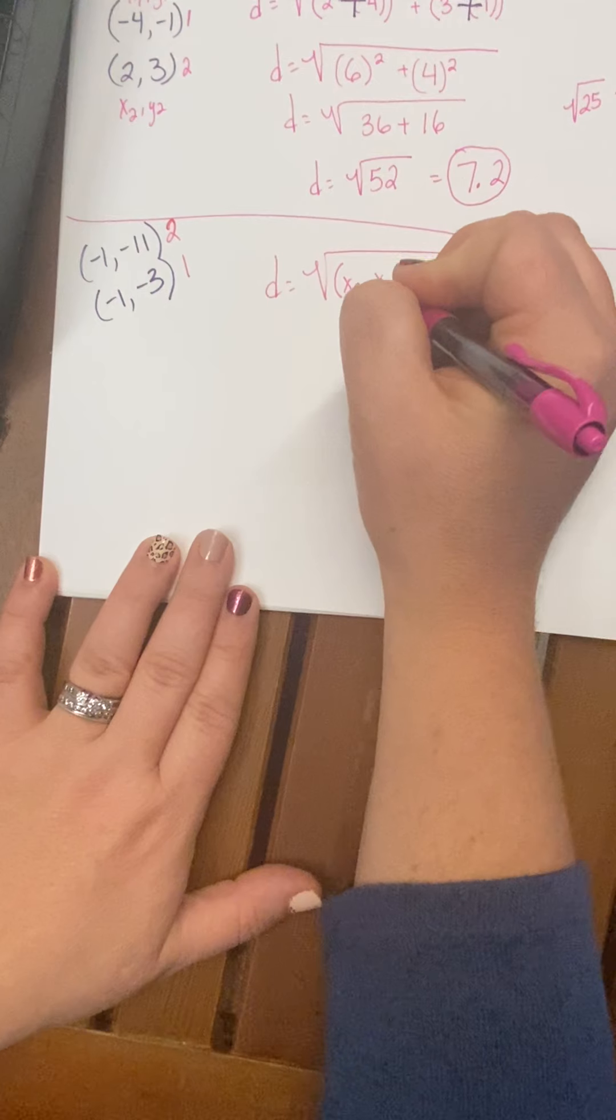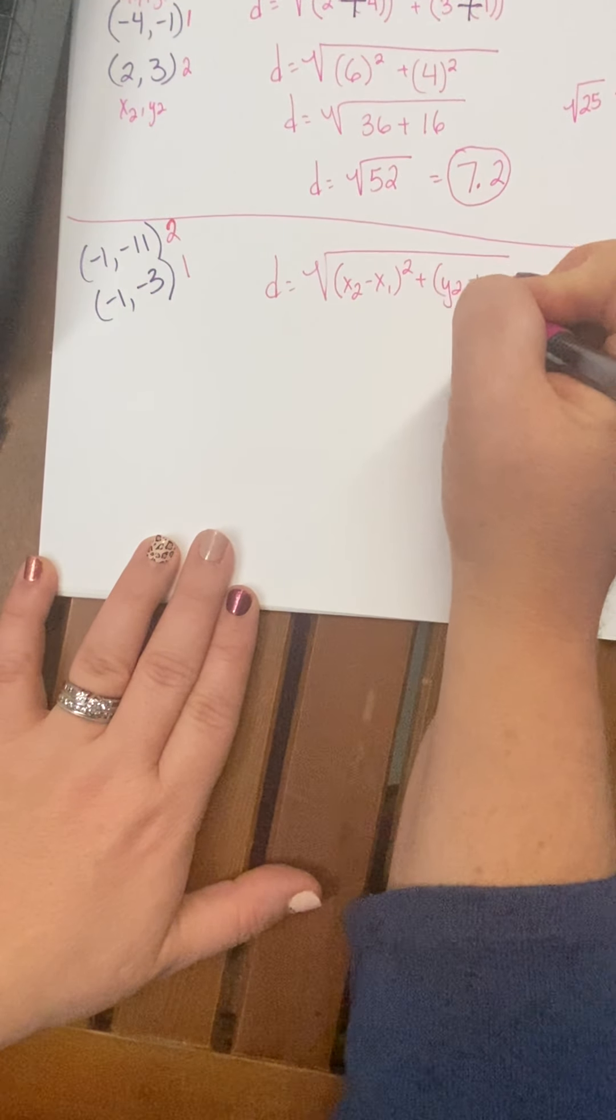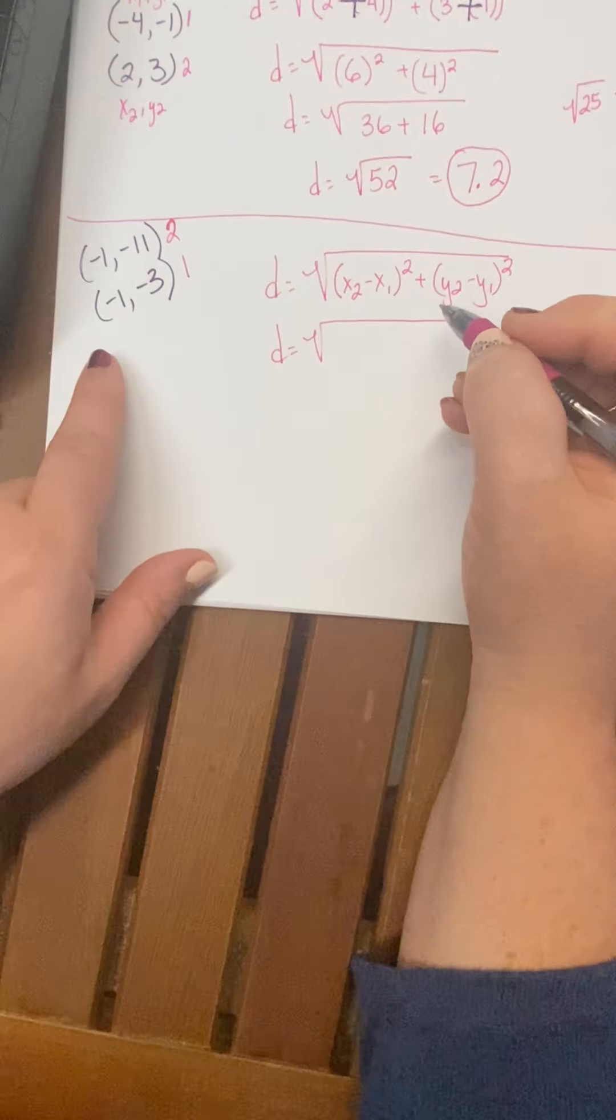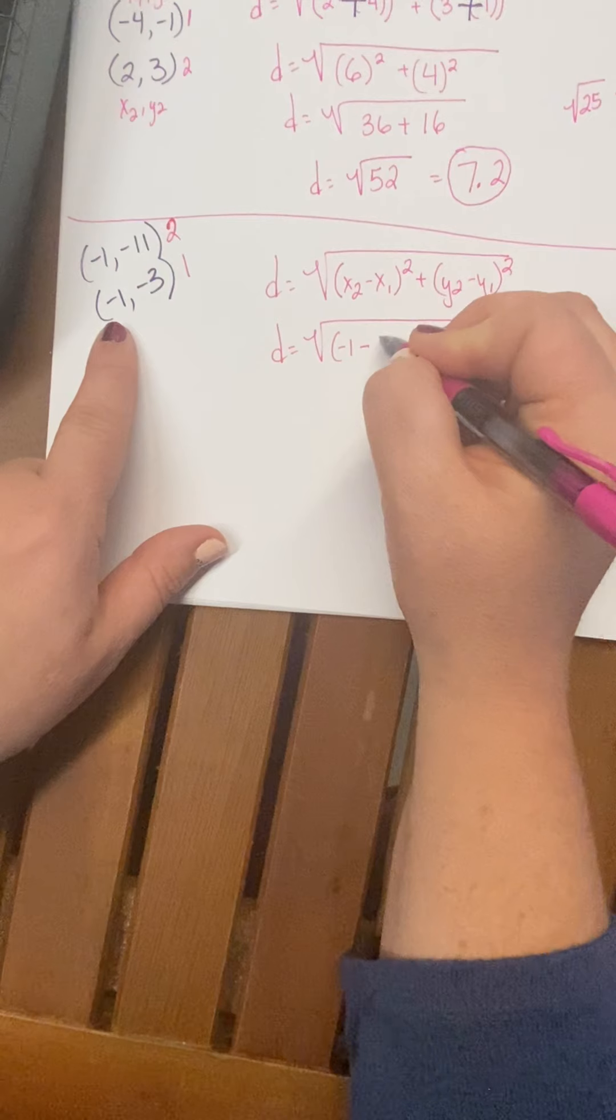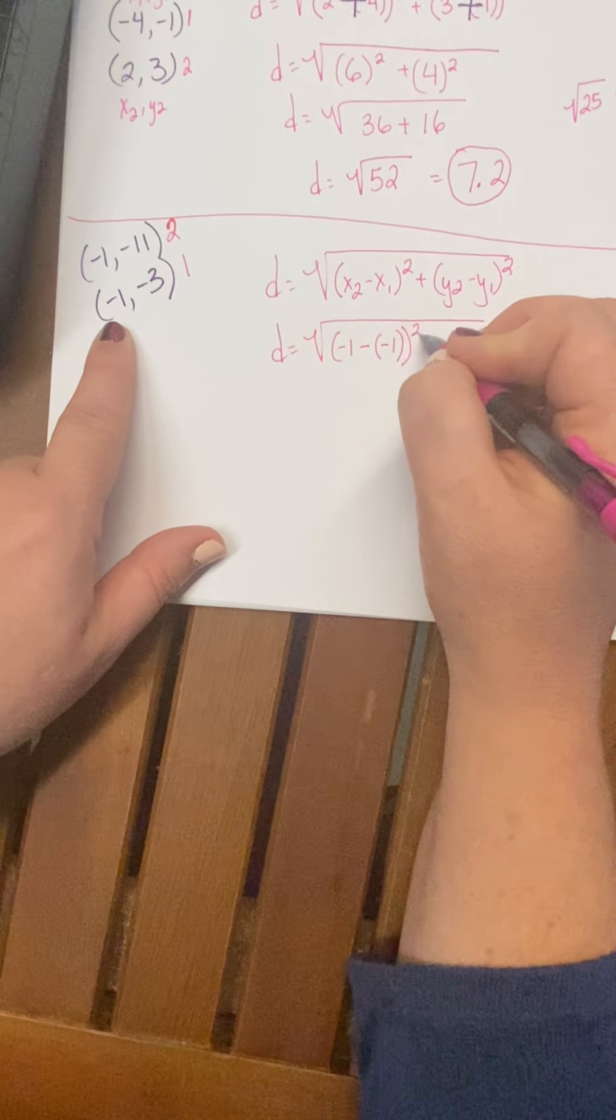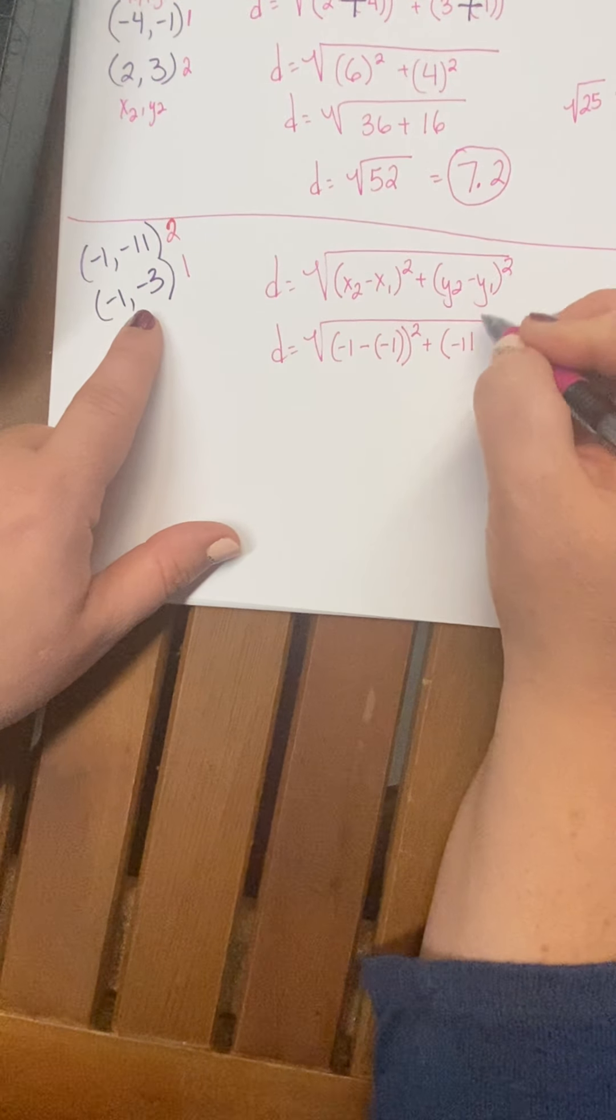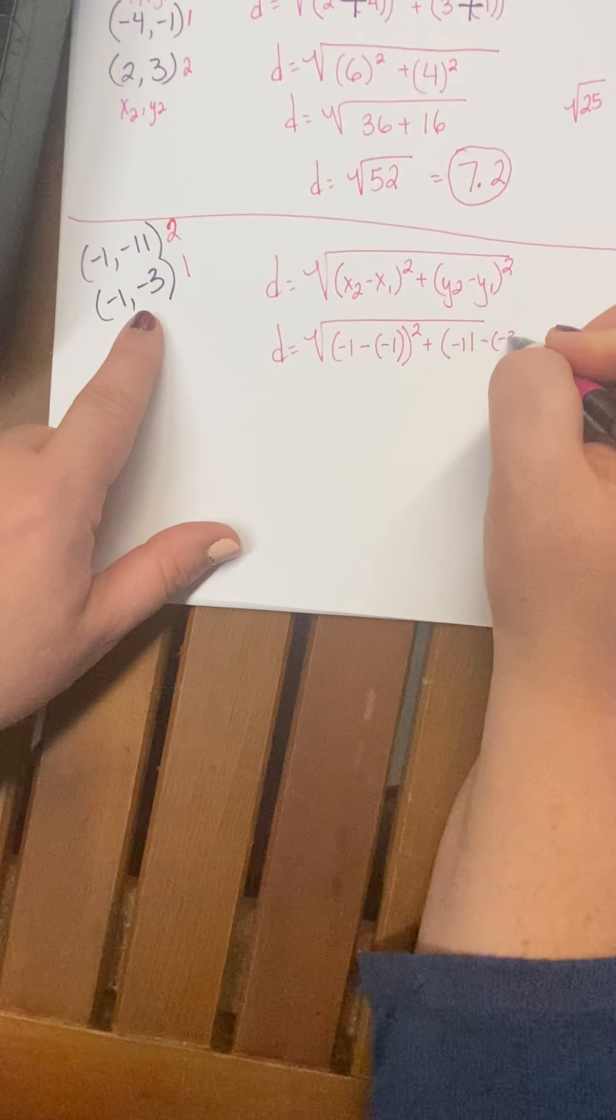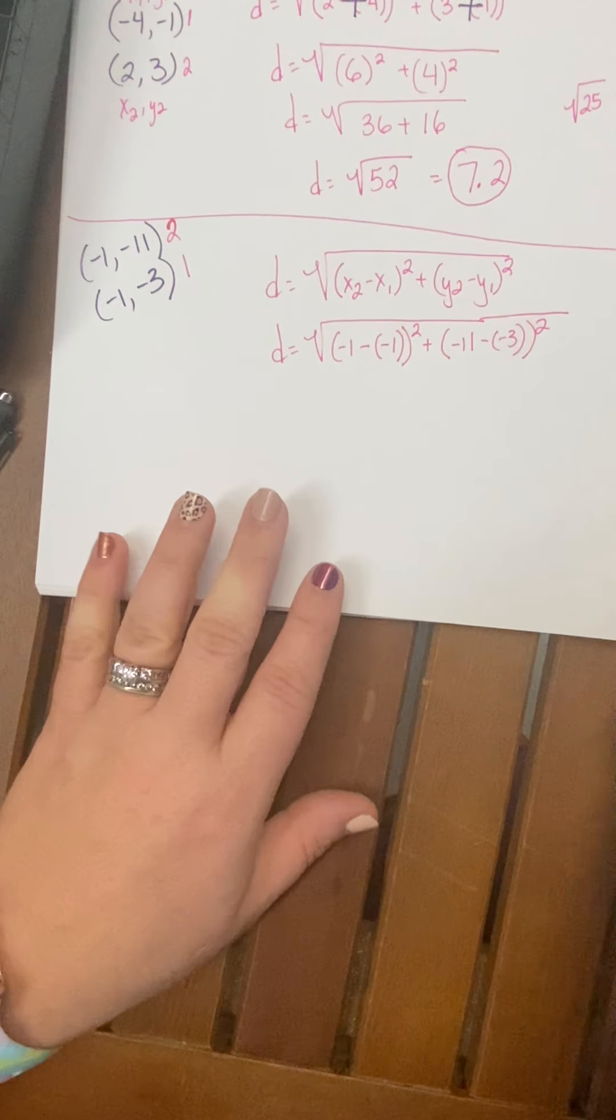So let me write my formula down again. And let me fill in my formula. My x2 is negative 1. My x1 is negative 1. My y2 is negative 11, and my y1 is negative 3. They're all negatives. Look at that.